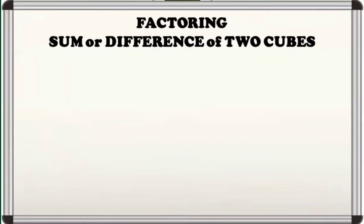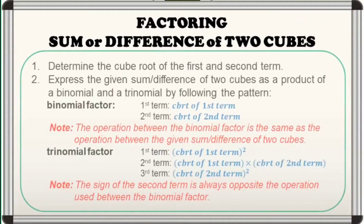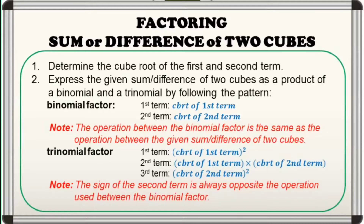So ano nga ba ang mga steps sa pag-factor ng sum or difference of two cubes? First, we determine the cube root of the first and second term. And second, we express the given sum or difference of two cubes as a product of a binomial and a trinomial by following the pattern. In our binomial factor, its two terms are the cube roots of the first and second terms, and the operation between them is the same as the operation between the given sum or difference of two cubes. And in our trinomial factor, the first term is the square of cube root of the first term, the second term is cube root of first term times cube root of second term, and the third term is square of cube root of second term. The signs of the first and third term are positive, while the sign of the second term is always opposite the operation used between the binomial factor.